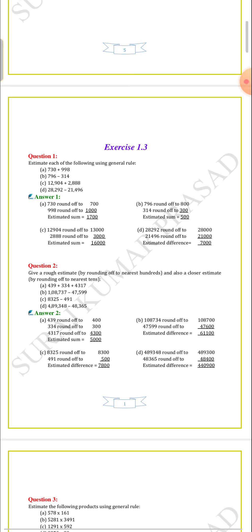If we add 730 plus 998, we get a value near 1,700. Because 1,700 is not the actual value, but it is the reasonable guess of the actual value.